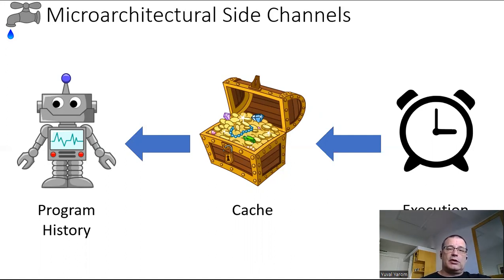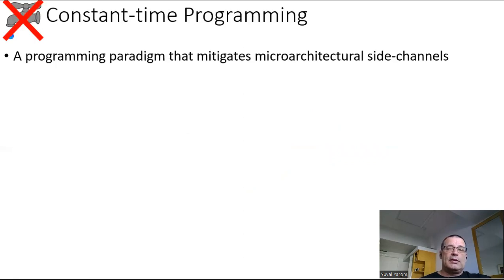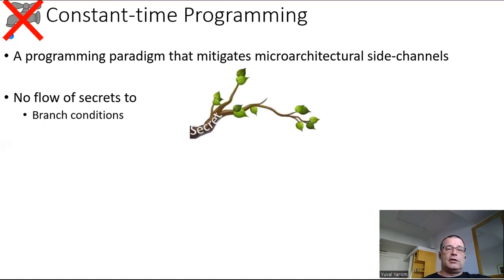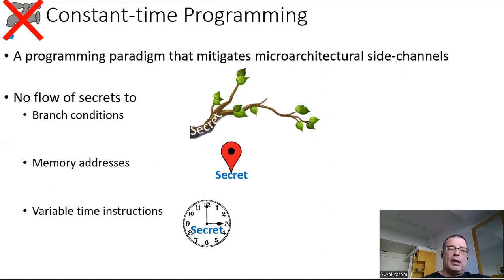And the main technique that we use against such microarchitectural side channels is constant time programming. That's a programming paradigm that aims to protect against microarchitectural side channels. And what it basically does is control the flow of secrets. So for a program to be constant time, we need to ensure that there is no flow of secret into branch conditions. No flow of secrets to memory addresses, so you cannot access an array at an offset that depends on a secret. And that instructions that have variable time depending on the arguments do not have secret arguments. And this has been developed over the past two decades, and it can currently be considered the defacto requirements for cryptographic code.